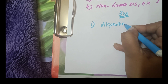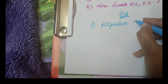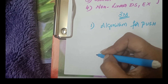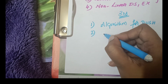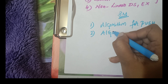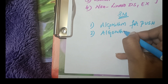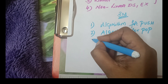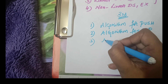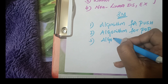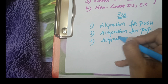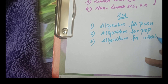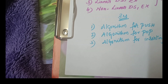Next, coming to 3-mark questions. In 3-mark questions, they are mostly going to ask algorithms. Among the most expected, the algorithm is push. These algorithms come under the stack. So algorithm for push and algorithm for pop — this is our most compulsory question if you are going to face a data structure examination. Push and pop are the core concepts of stacks.